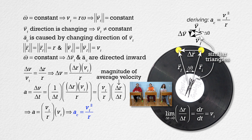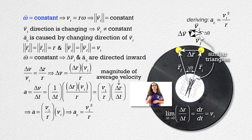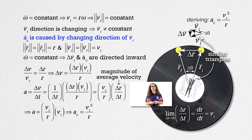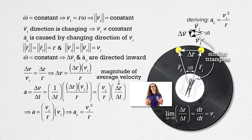For an object moving at a constant angular velocity, the magnitude of the tangential velocity remains constant; however, the direction of the tangential velocity is changing. It is the change in the direction of the tangential velocity as a function of time which is the centripetal acceleration, which we just derived. Thank you very much for learning with me today.